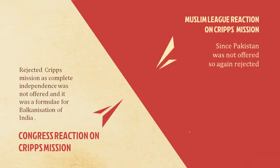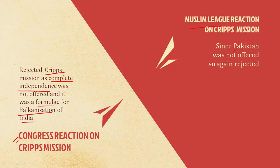The reaction of various sections on the Cripps mission: Congress rejected it because again complete independence was not offered — only Dominion status — and it was also a formula for balkanization, the division of India into different parts. Muslim League also rejected it because Pakistan was not offered, so they again did not accept the Cripps mission.